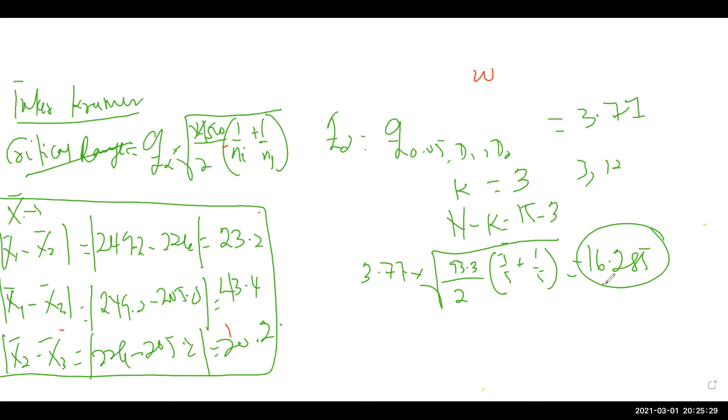We compare the critical range value to the absolute mean value. So between X1, the club one and club two, their absolute mean value is 23.2. Therefore, between X-bar one minus X-bar two, 23.2, that is greater than 16.285. So indeed, we can say that there are differences between club one and club two. In simple terms, if the absolute mean value is greater than the critical range, that's what you do.